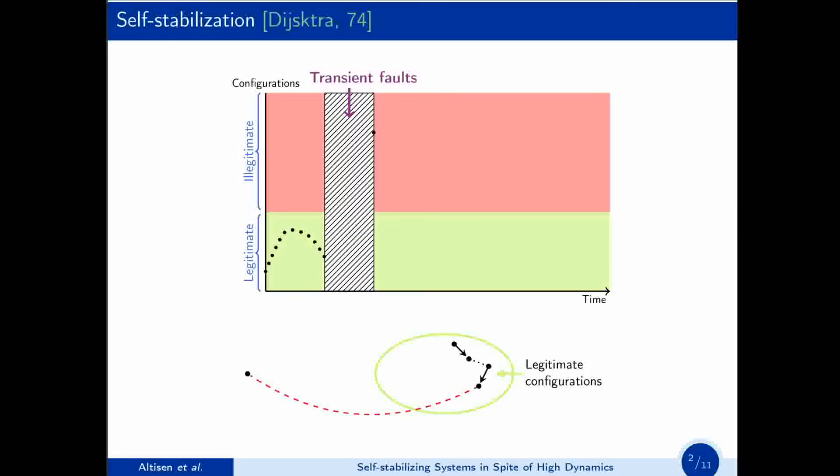Self-stabilization was introduced by Dijkstra in 1974. When the system behaves correctly, it remains in so-called legitimate configurations. However, if some perturbations, such as transient faults, hit the system, it may start to behave incorrectly, to deviate from its specification. If the system is self-stabilizing, it will recover in finite time a correct behavior.